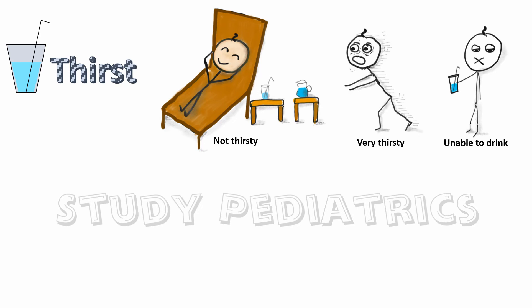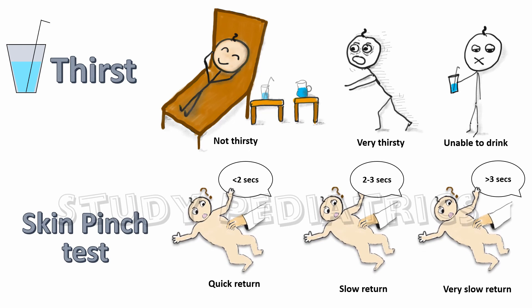The last parameter is the skin pinch test, which is based on the turgidity of the skin. In a non-dehydrated baby, with normal turgor pressure, skin returns quickly — in less than 2 seconds. If dehydration is present, the skin becomes lax and returns slowly in some dehydration, and very slowly in severe dehydration. These six parameters help the clinician determine the extent of dehydration in babies.